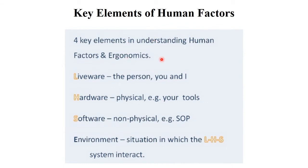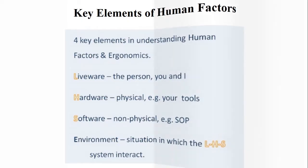There are four key elements in understanding human factors and ergonomics. Ergonomics is a study of software, hardware, and liveware. Software includes all non-physical characteristics like operating systems. Hardware includes every physical tool you can touch, like keyboard, mouse, monitor, and CPU. The interaction between the human and this software and hardware is called liveware — that means the person, you and I. The environment where liveware, hardware, and software interact — these are the key factors of ergonomics.